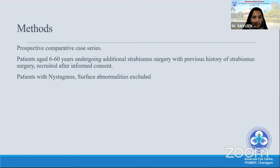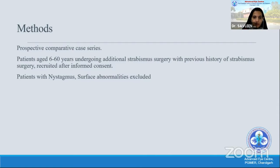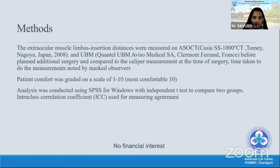It was a prospective comparative case series where we recruited patients aged 6 to 60 years who had a history of strabismus surgery and now required an additional strabismus surgery. Patients who could not have a good ASOCT scan, or conditions that precluded a UBM or ASOCT such as nystagmus or corneal surface abnormalities, were excluded. The muscle insertion distances were measured from the limbus by the ASOCT and the same patient's same muscle was imaged on the UBM.